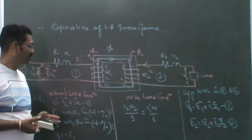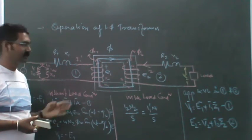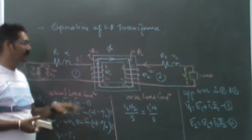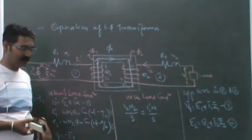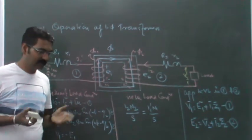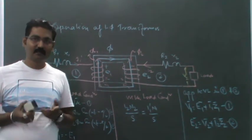This is called the load component of primary current. It establishes flux phi1, which is equal and opposite to phi2, so the net flux phi remains unaltered.